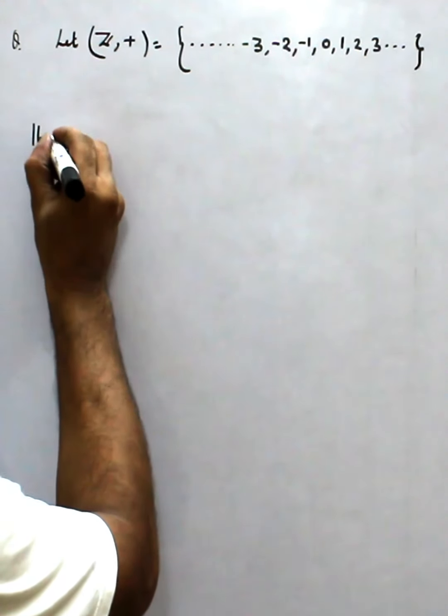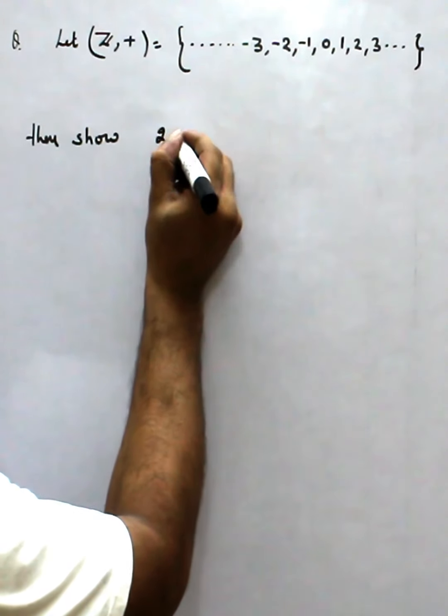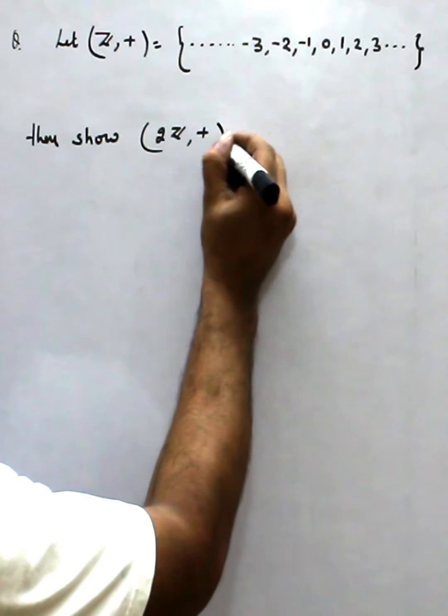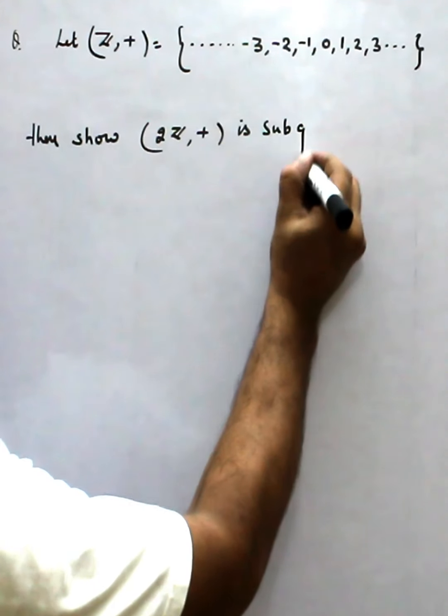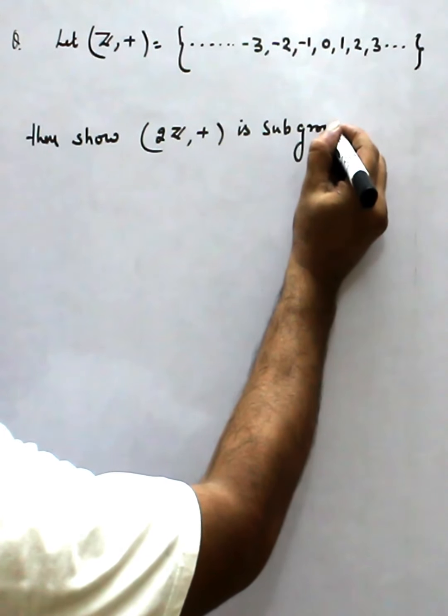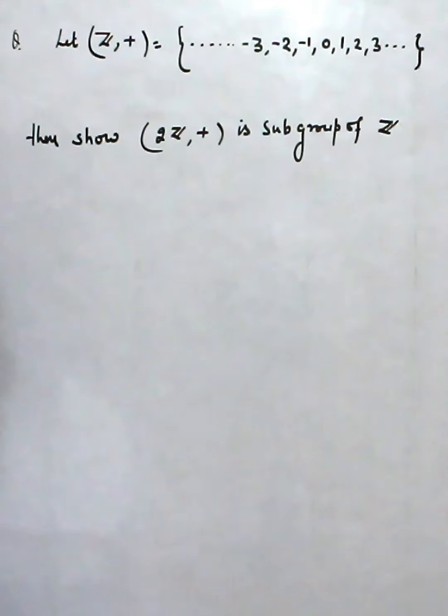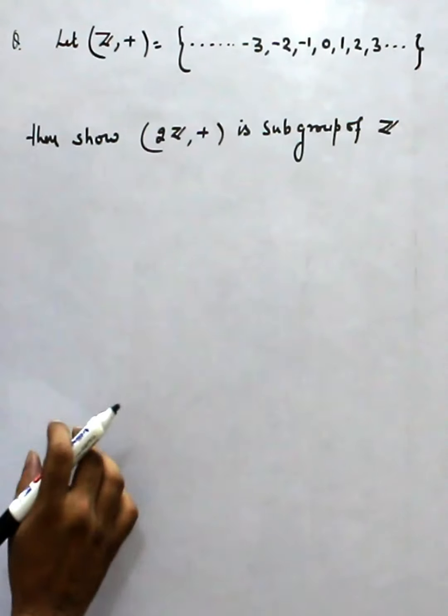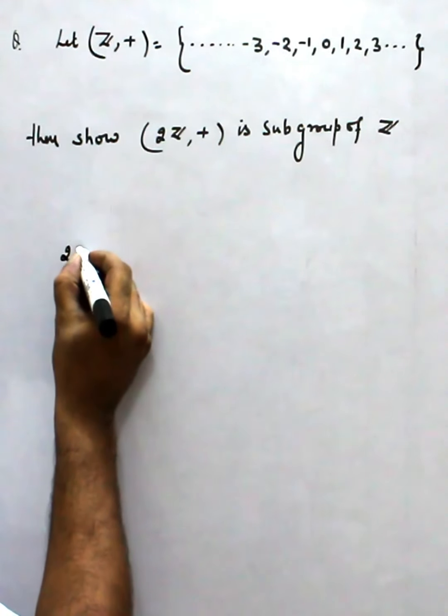Then show that 2Z is a subgroup of Z. So simple, first we identify which type of elements are in 2Z.